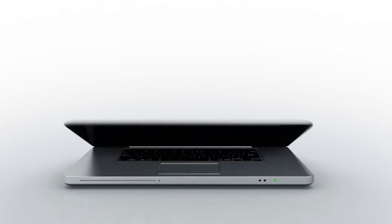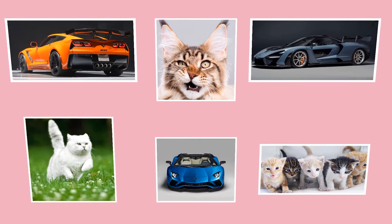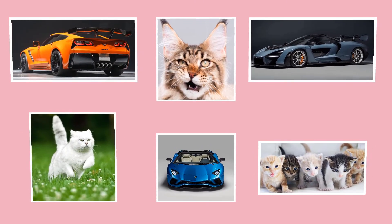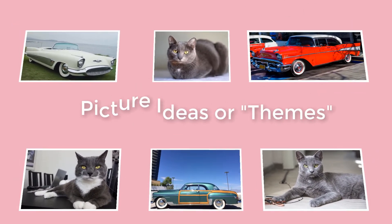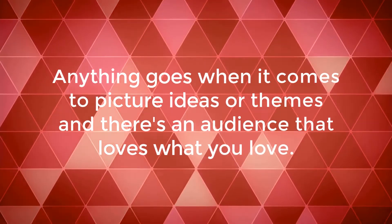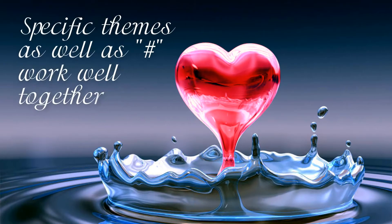Have you considered creating a theme? A theme is a picture or video idea that you center your Instagram profile around. Themes can be general, such as taking pictures of cars or cats, or you can become really specific by taking pictures or videos of 1950s cars or gray cats. Themes can be anything you want, and there are enough people on Instagram that you will most likely find an audience. Creating a theme that is specific, as well as using popular specific hashtags, will help in getting your creation seen by more people.